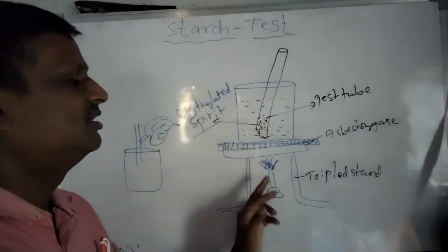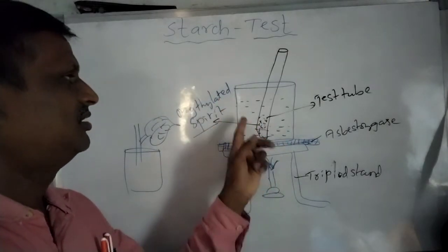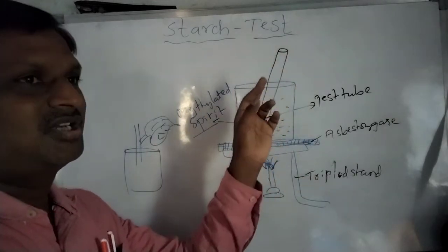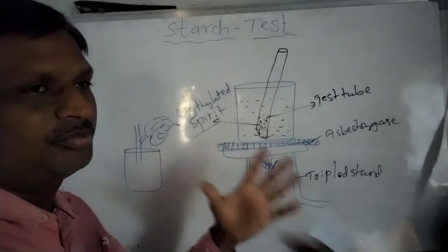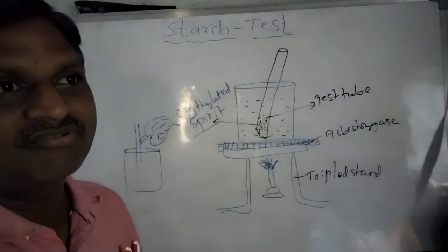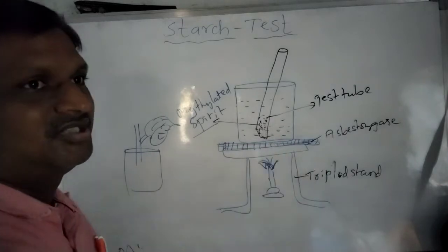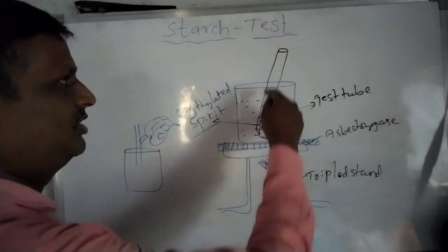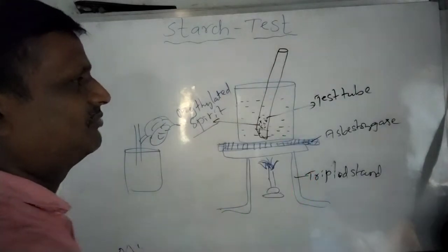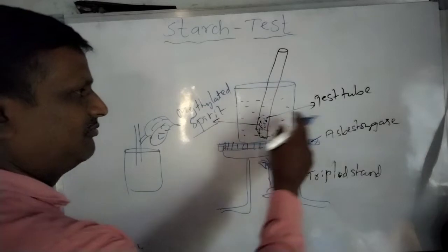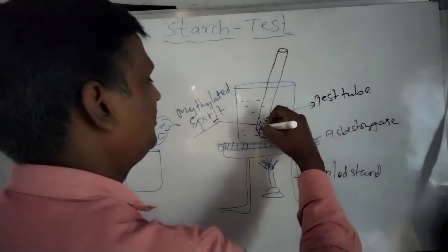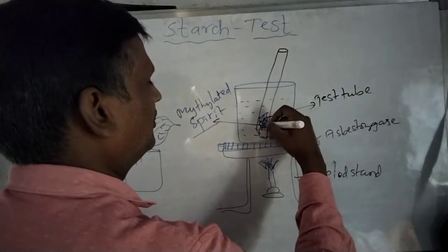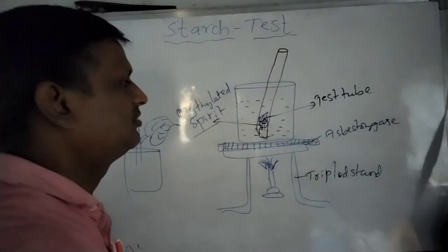If the methylated spirit is boiled directly on the Bunsen burner, the fumes coming out of the test tube could catch fire and the whole setup could burn. That is why we take this precaution — the test tube containing methylated spirit is kept inside the beaker of water. The boiled leaf is then introduced into the methylated spirit.